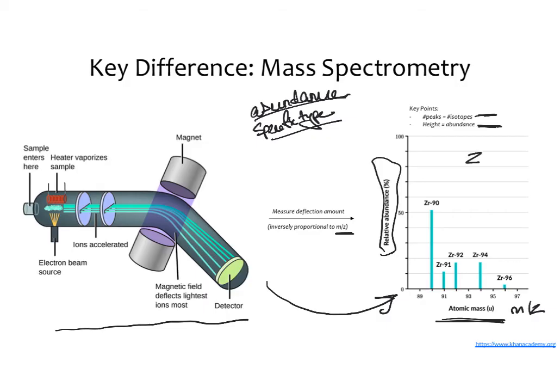As a simple example, this is a graph for zirconia. Zirconia-90 is the most abundant because it has the tallest peak, but there are five different isotopes or forms of zircon naturally occurring that we can see in different abundances. This is meant to illustrate how mass spec gives you results. You don't need to understand the physics details, but you do need to understand that abundance is measured by how high the peak is, and isotopes by how many peaks there are.